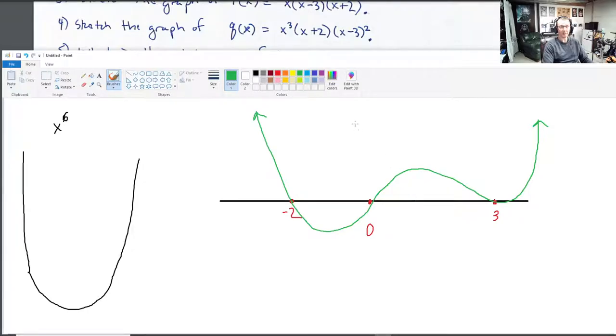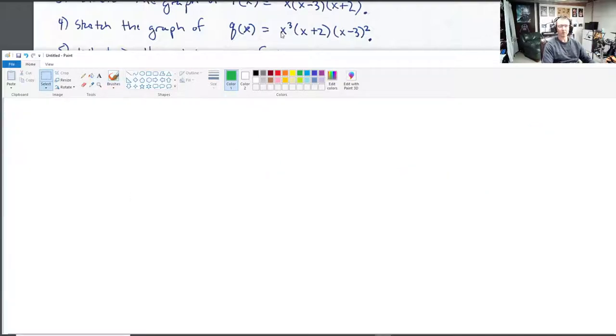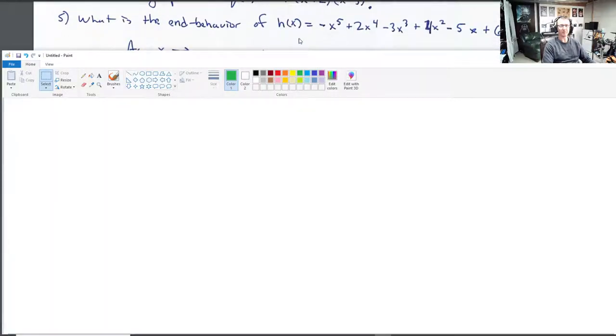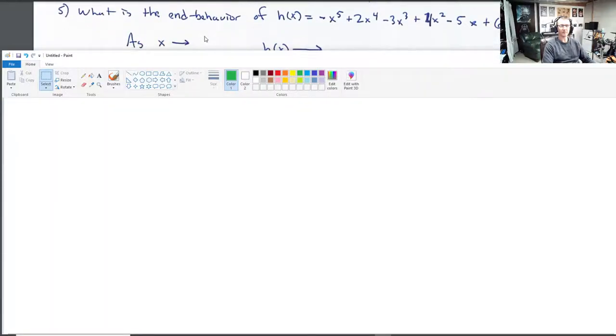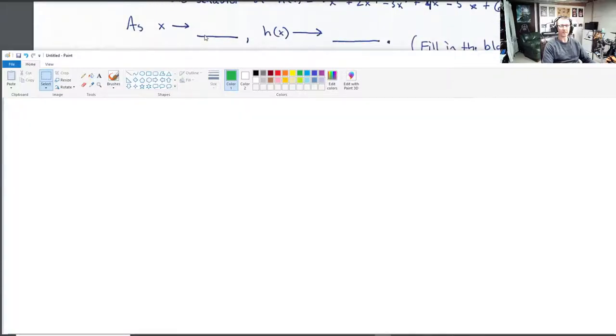If I wanted a better graph, I'd say plot a few more points to make it more accurate. But as a sketch, there you have it. Next question. What is the end behavior of this thing? Okay. And I give you some blanks to fill in. So I'll just write these out.